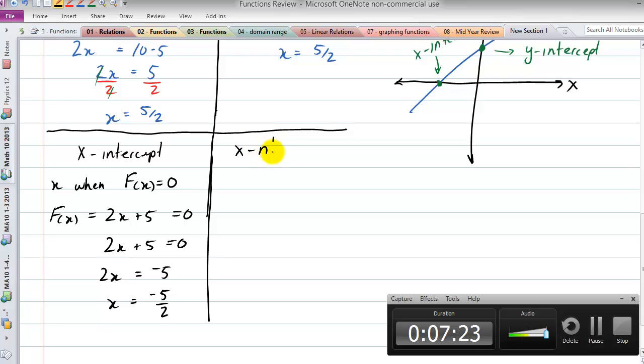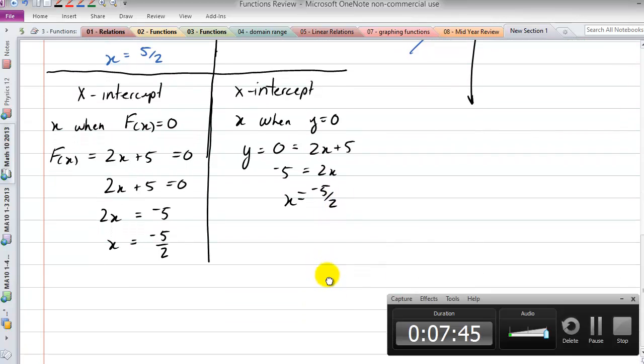Same thing over here for the two-variable equation. x when y equals 0, so y equals 0 equals 2x plus 5, so negative 5 equals 2x, x equals negative 5 over 2.